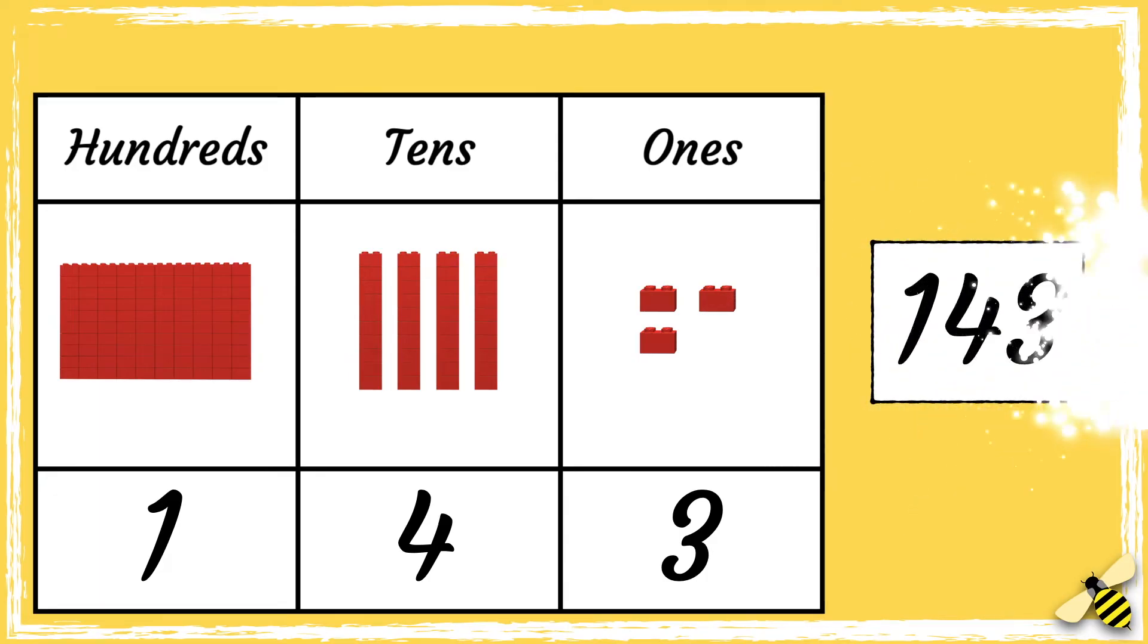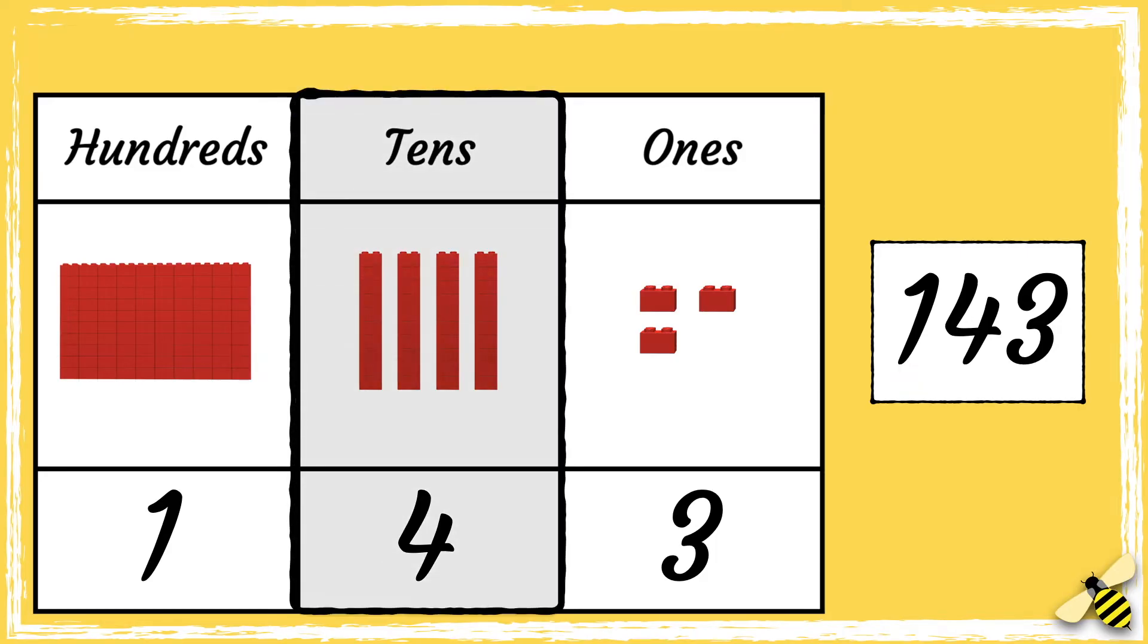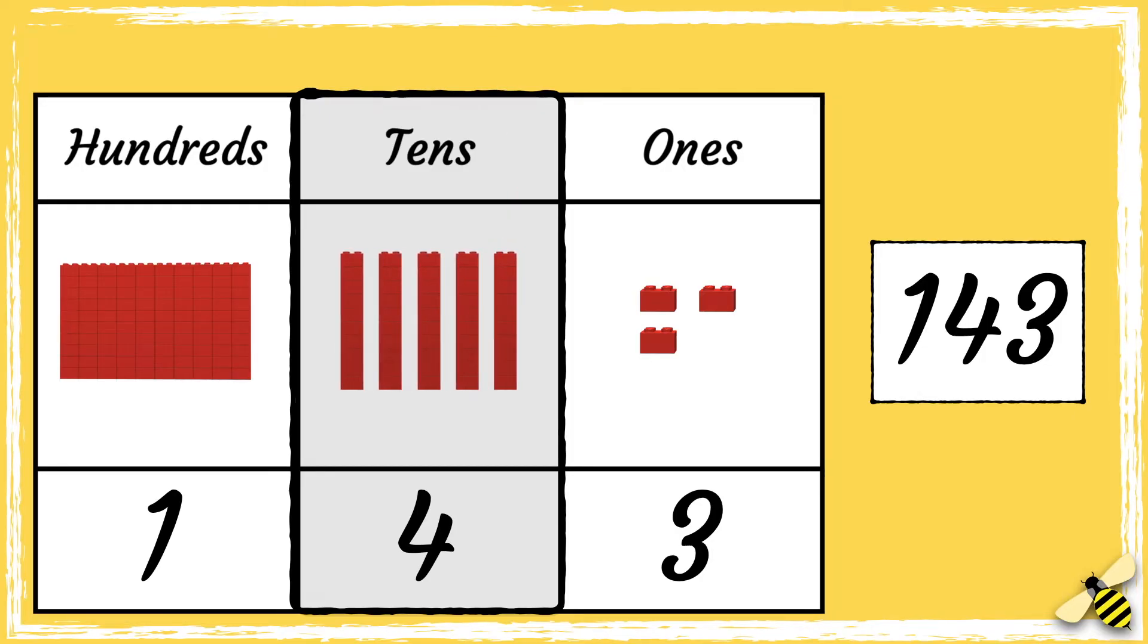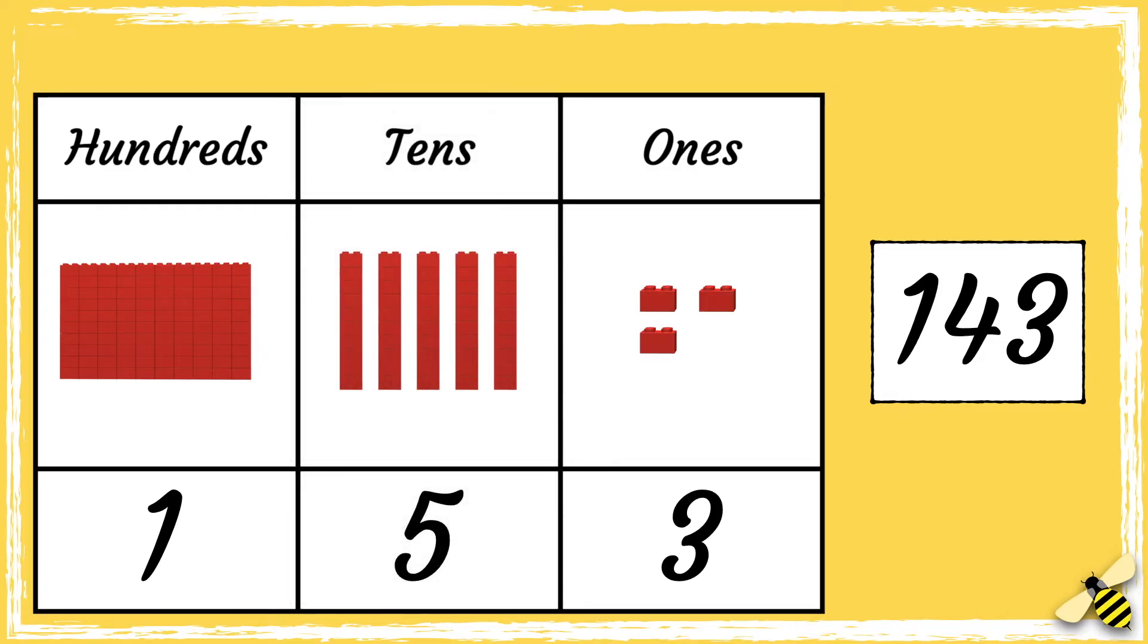Here is a place value grid showing the number 143. When we add 10 more to a number, we need to look at the tens column. So let's add another 10. Four tens becomes five tens. So the new number is 153.